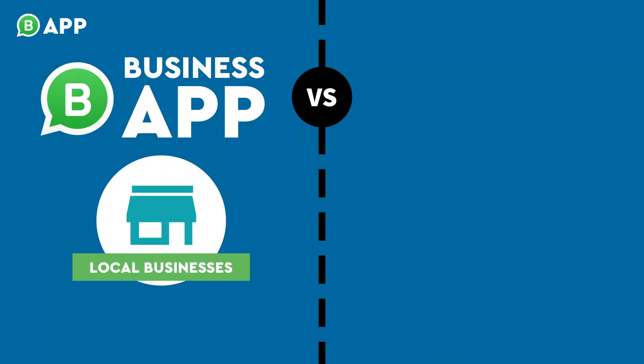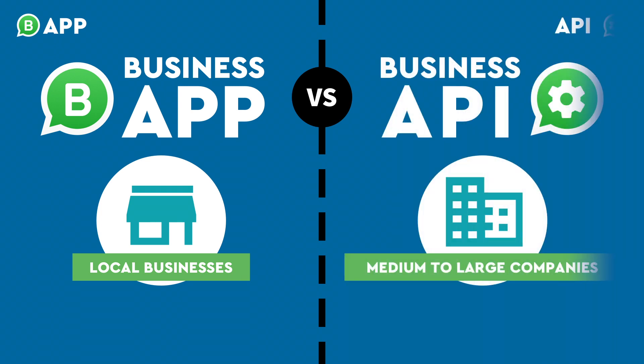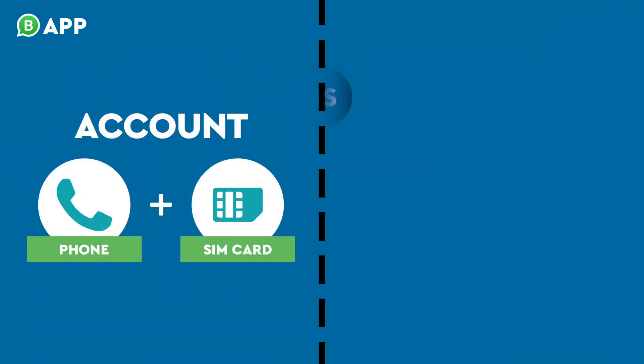The app is designed to meet the needs of local businesses. This type of account limits you to one user on one phone. Unlike the app, the API does not have an interface. Instead, it allows you to connect the tool of your choice, making it possible to answer messages with multiple users across multiple devices. And the API is designed for the needs of larger companies.